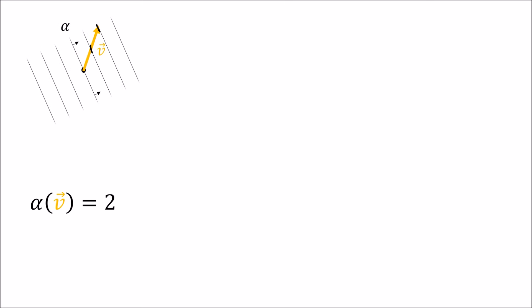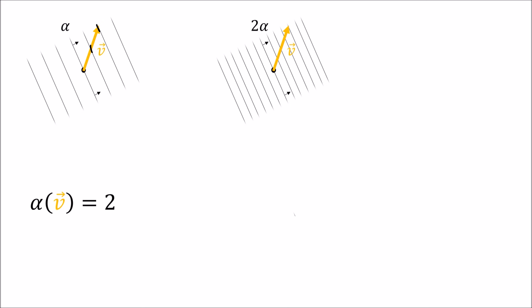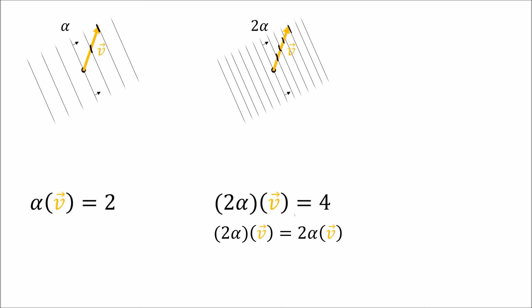We have covector alpha acting on vector V to give a value of two. If we want to make this covector twice as big, what we do is make the stack denser, because when we make the stack denser it increases the value of alpha acting on V. When V pierces two alpha, we get four lines pierced. So applying two alpha to V is the same as applying alpha to V and then scaling the result by two. To shrink alpha to half its size, we spread the lines out so they are half as dense, and then one-half alpha acting on V gives a value of one — the same as applying alpha to V and then scaling by one-half.